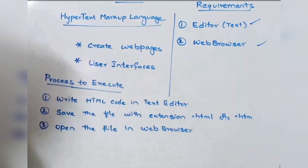Next, what is the requirement? What software do we need to implement HTML? There are no special softwares required. First, we need any text editor to create HTML, and second, a web browser. The text editor is used to write the HTML tags, and the web browser is used to run the HTML code.